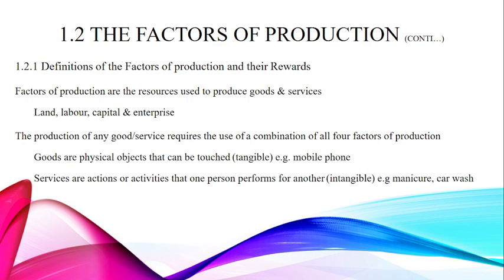Chapter number one: the basic economic problem. We have four different types of factors of production — land, labor, capital, and enterprise. These help us to produce new products. The production of any good and service requires the use of these factors in combination or individually.